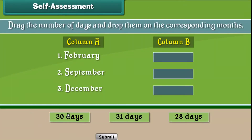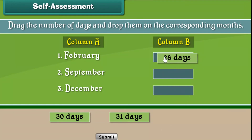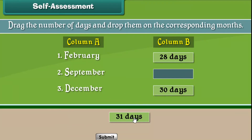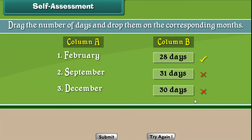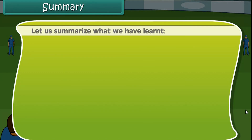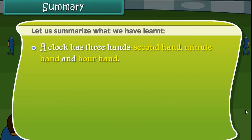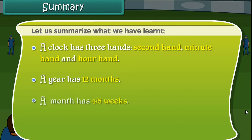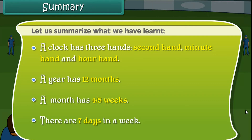Self-assessment. It is time to test your understanding. Drag the number of days and drop them on the corresponding months. A year has 12 months, a month has four or five weeks, and there are 7 days in a week.